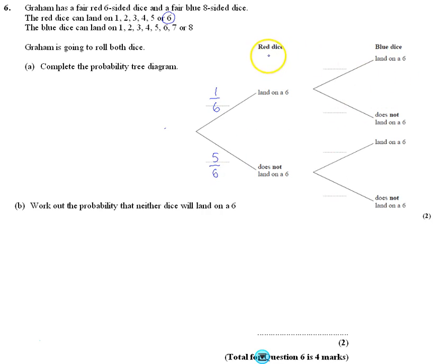Now, what's the probability the blue dice lands on a six? Well, there's eight options, so it's one out of eight. The probability it doesn't land on a six is seven-eighths.